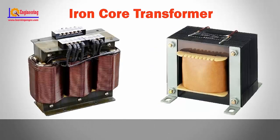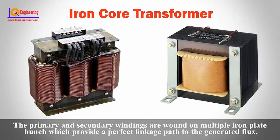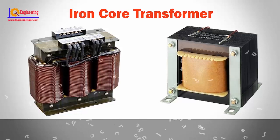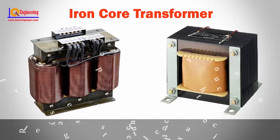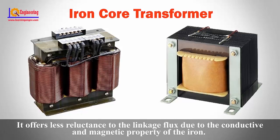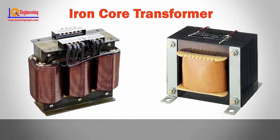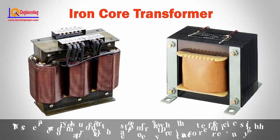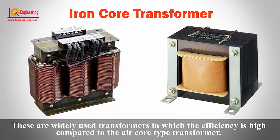Iron core transformer: The primary and secondary windings are wound on multiple iron plate bunches, which provide a perfect linkage path to the generated flux. It offers less reluctance to the linkage flux due to the conductive and magnetic property of iron. These are widely used transformers in which the efficiency is high compared to the air core type transformer.